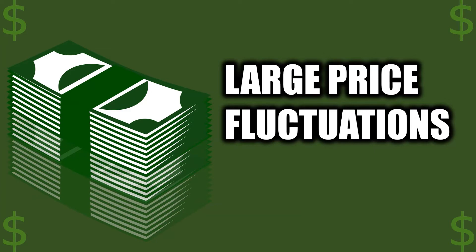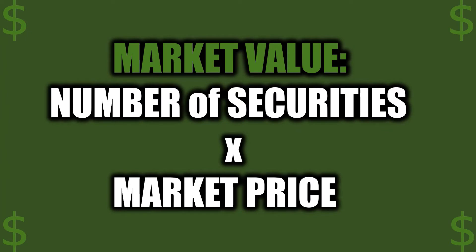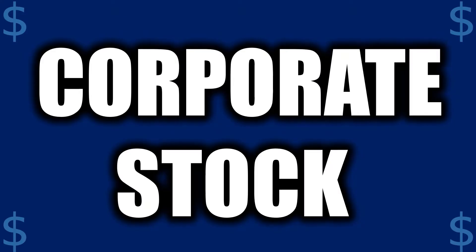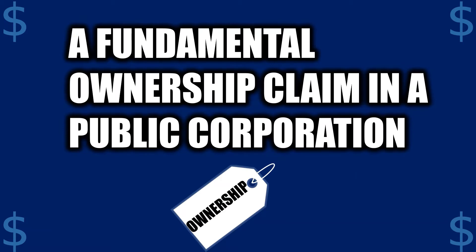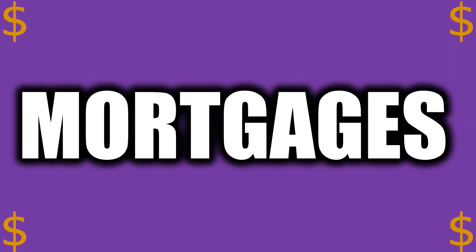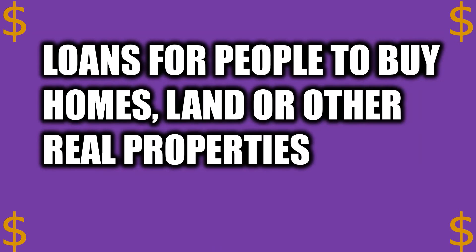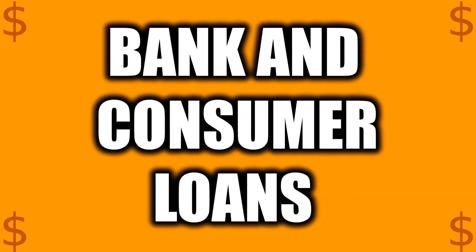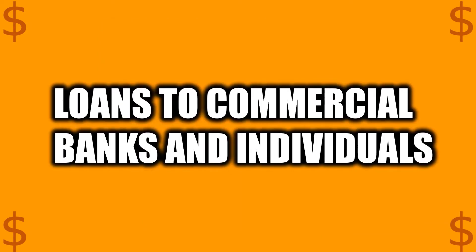The market value of capital market instruments depends on the number of securities and their market prices. Just like money markets, multiple categories of securities move throughout capital markets. These debt and equity securities are the following: Corporate stock — a fundamental ownership claim in a public corporation. Mortgages — loans for people to buy homes, land, or other real properties. Bank and consumer loans — loans to commercial banks and individuals.